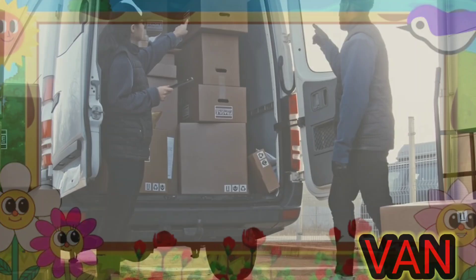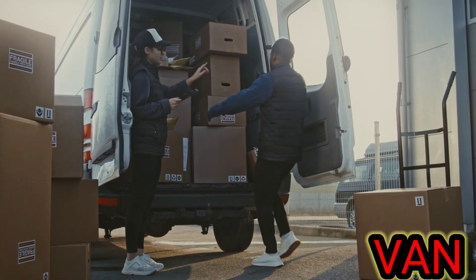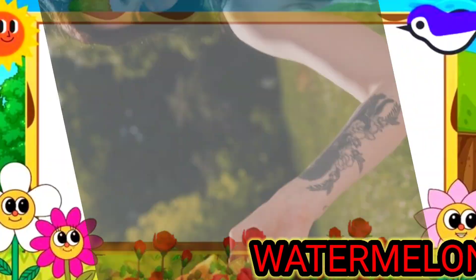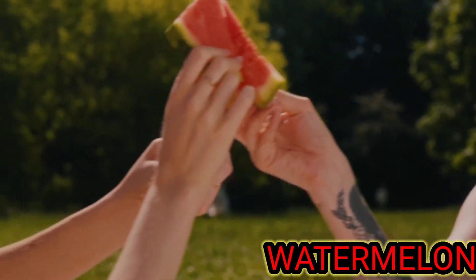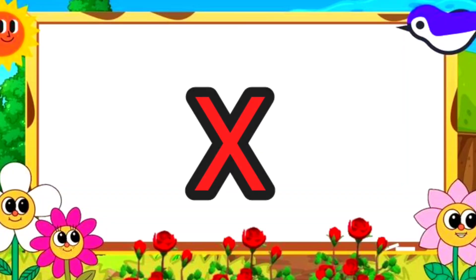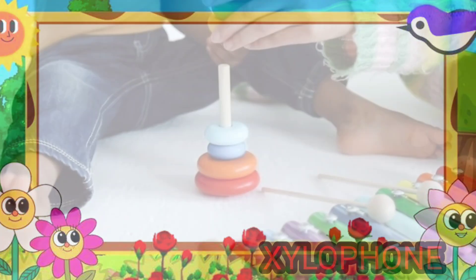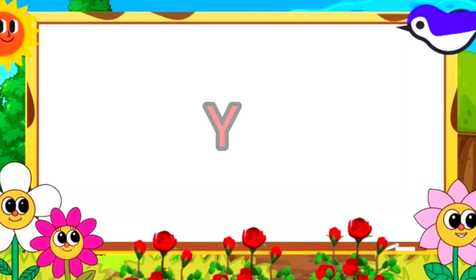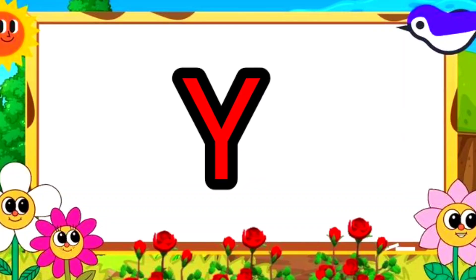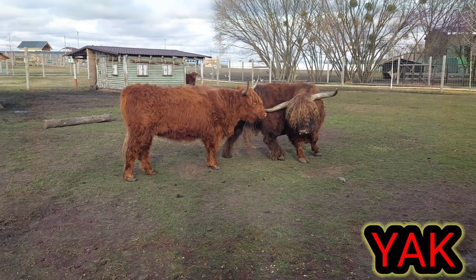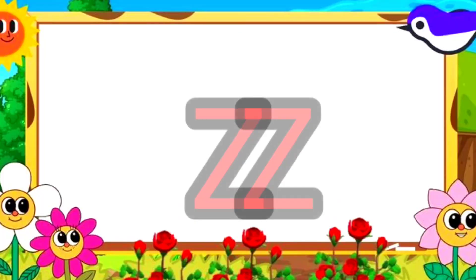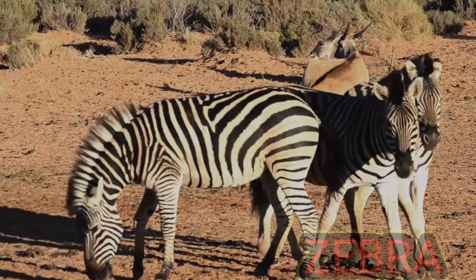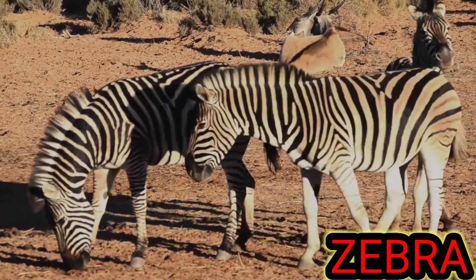U for umbrella. W. W for watermelon. X. X for xylophone. Y. Y for yak. Z. Z for zebra. Okay, bye-bye, bachos.